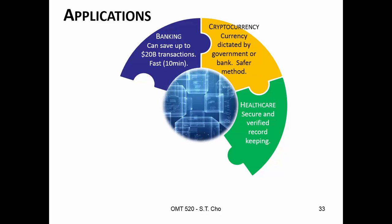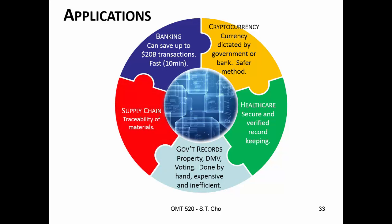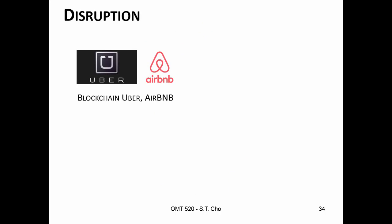It could be used for healthcare records, government records - doing it by hand is very expensive, why not just do it in a block? For supply chain, many companies are implementing blockchain for full traceability. Since blockchain removes a middleman and brings everybody together, what's possible disruption? Why not blockchain Uber or Airbnb? Why do we need those guys? Why are we paying for the middlemen?